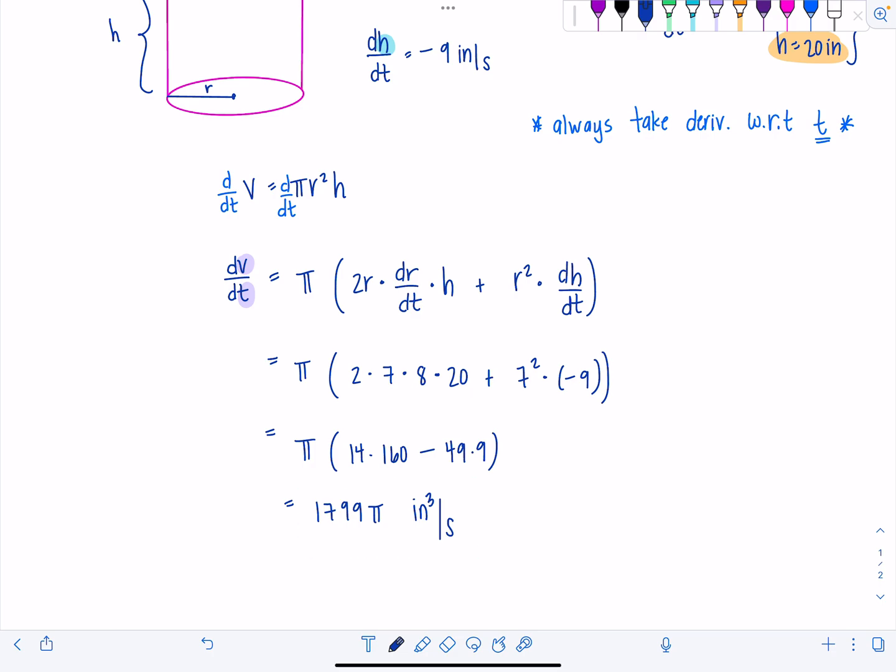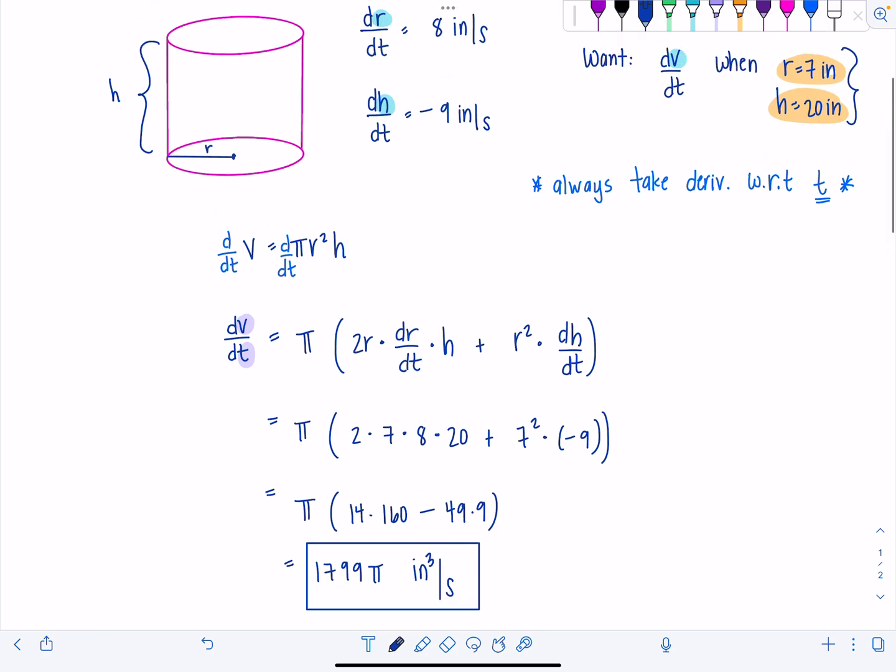Since this is dV/dt, the units are going to match. I have a V in the numerator. Volume is always cubed. And then the units for time in this problem are seconds. So that's the rate at which the volume is changing and we are done. Leave it like this. This is the exact answer. No rounding. Now this one is a little more straightforward just because they gave us all the info that we needed. We didn't have any extra variables. I'm going to do one more example.